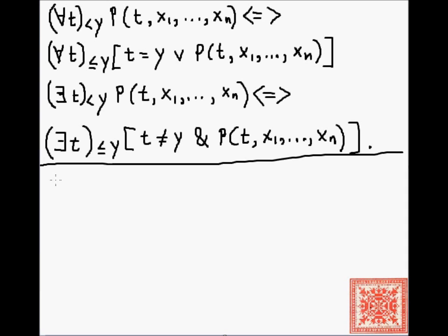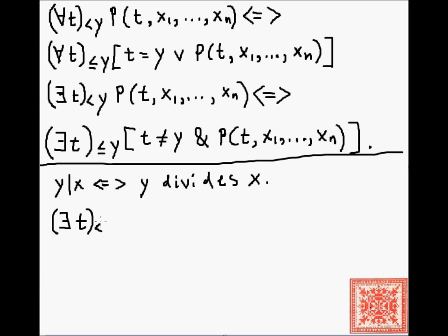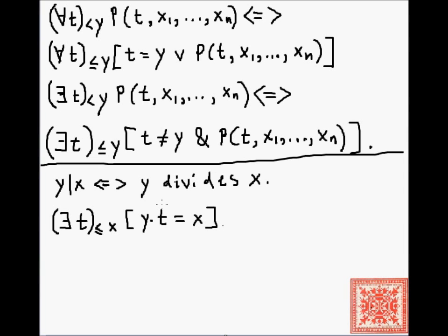Let's consider a couple of examples using bounded quantifiers. We can define the predicate 'y divides x': y divides x if and only if there exists t ≤ x such that y × t = x. By the previously proved theorem, 'y divides x' is a primitive recursive predicate.